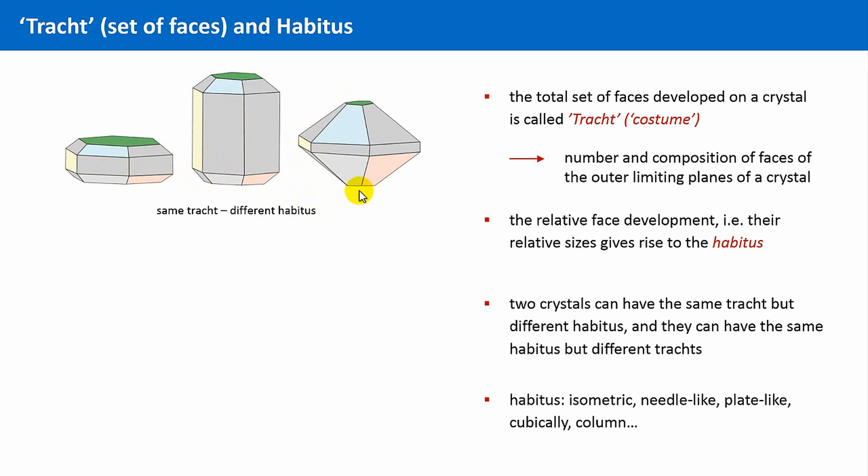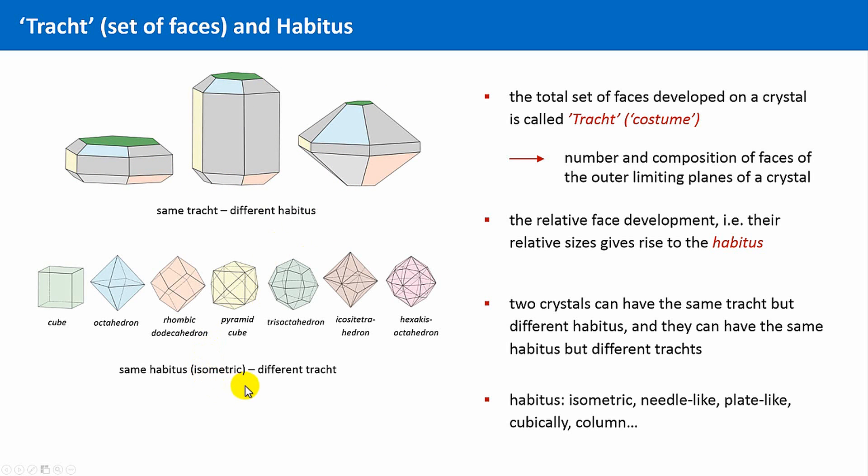Okay, the opposite is also true. Crystals of the same habitus can have very different set of faces. And this is shown here. All these crystal shapes have the same habitus, here they are isometric, meaning they have roughly the same dimensions in the principal space directions, but they possess all different set of faces. The cube, for instance, is limited by six squares. The octahedron by eight triangles. The rhombic dodecahedron by, as you can already tell by the name, by 12 rhombi, and so on.